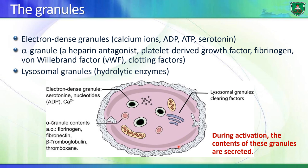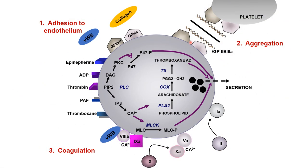Once platelets are activated, these granules fuse with the plasma membrane releasing their contents. On the platelet surface there are numerous receptors: a receptor for epinephrine, a receptor for ADP, another for thrombin, and so on. There are also glycoproteins on the cell surface, which are important for interacting with collagen, von Willebrand factor, fibrinogen, and so on - and for forming aggregation of platelets at the site of injury.